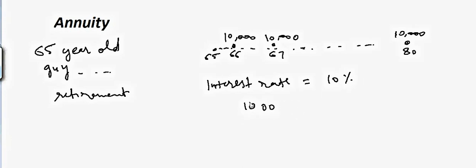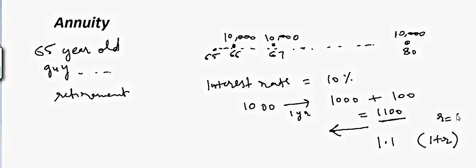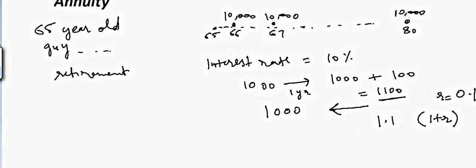If you deposit one thousand dollars into the bank, after one year it should be one thousand plus 10% interest, which is one hundred dollars, giving you eleven hundred dollars. To back-calculate, you divide eleven hundred by 1.1, which is also written as 1 plus r, where r equals 0.1 for 10% (or 0.05 for 5%). So 1100 divided by 1.1 equals 1000 — that's how you back-calculate present value.